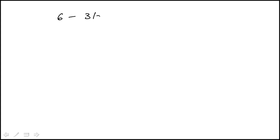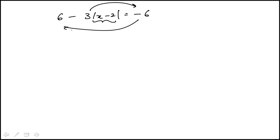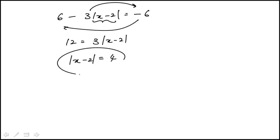Here we're given this absolute value equation and we're asked to find all solutions. I'm going to isolate that term — moving this over, bringing this minus 6 here. That becomes 12. So we have 3 times absolute value of x minus 2. Divide both sides by 3. That's my simplified form.